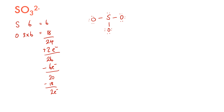Since the formal charge is 2 minus, we need to form an additional bond by taking one of the lone pairs from an oxygen and giving it to sulfur — creating a double bond. This gives us the final structure for SO₃²⁻.